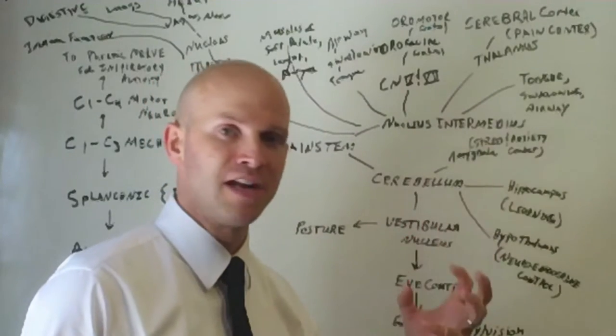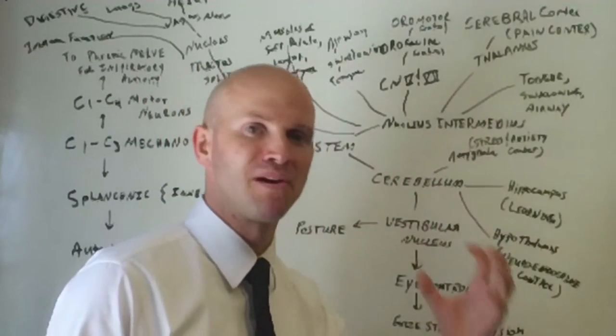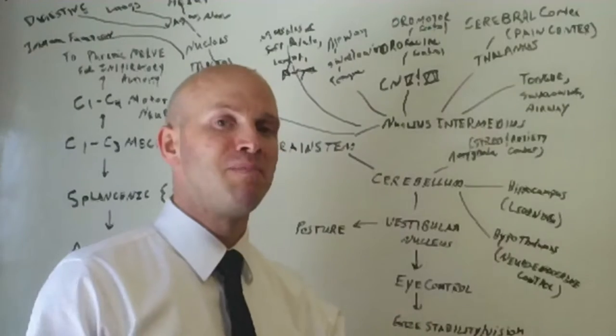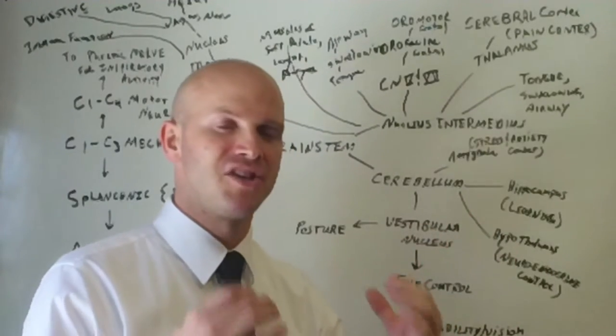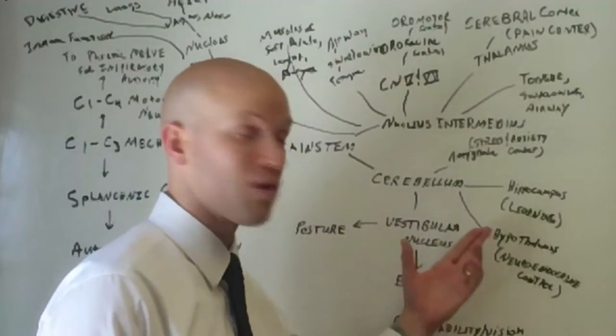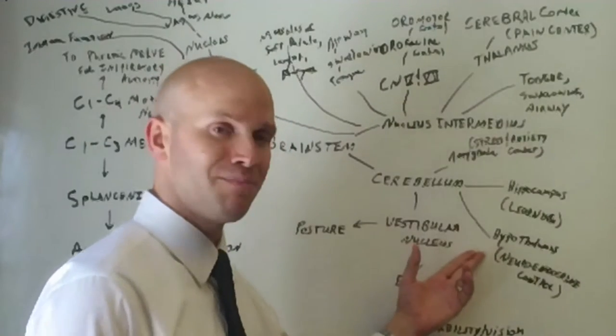The hippocampus, your learning ability, your ability to remember birth dates and things. People come in here, they have brain fog. They get adjusted, they leave usually thinking more clearly. What about the hypothalamus?